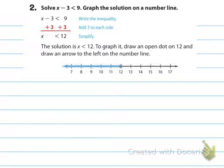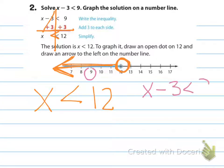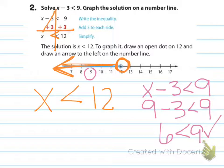Number two: solve x minus 3 is less than 9. We bring down the inequality sign and do the opposite — instead of minus 3, we add 3 to both sides, giving us x is less than 12. Less than means an open circle on the number line with the arrow going left. To check, plug in 9: 9 minus 3 is 6, and 6 is less than 9. The graphing is correct.